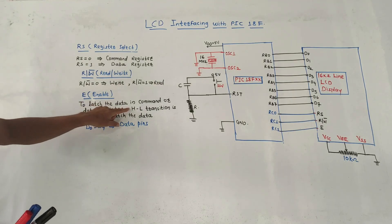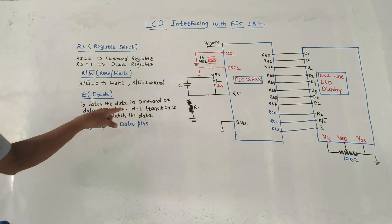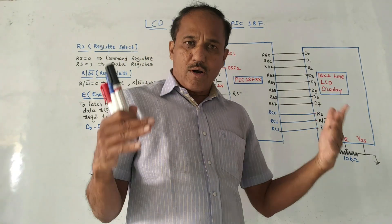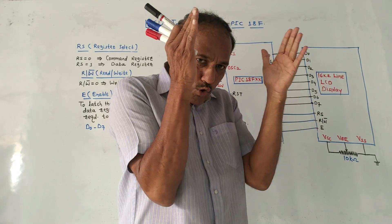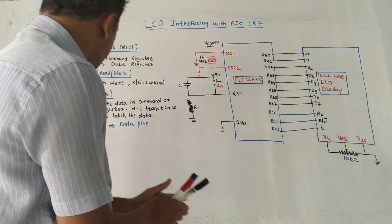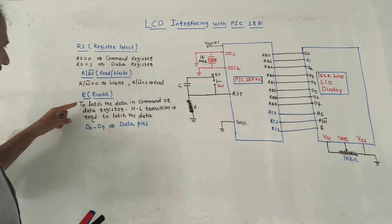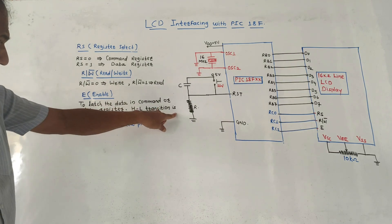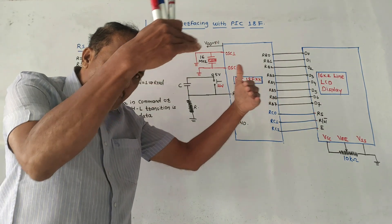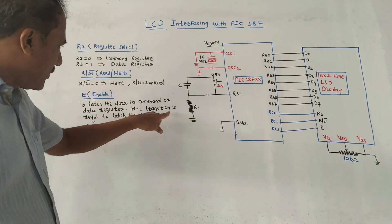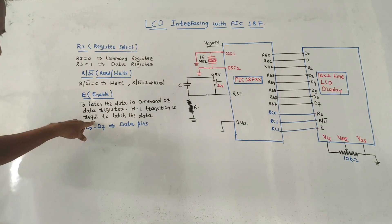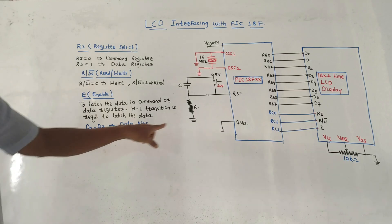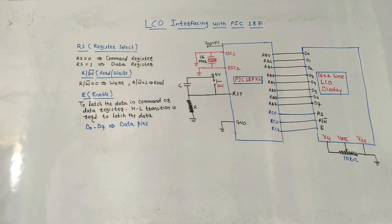The enable pin is used to latch the data in the command or data register. Whatever data you have, whether it is related to command register or data register, if you want to latch it for some time period, this enable pin is used. In this case, a high-to-low transition — also called negative edge transition — is required to latch the data. D0 to D7 are data pins, which in this figure are connected to Port B.